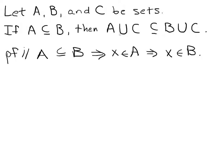Now, we want to prove that the union of set A and set C is a subset of set B union set C. We're going to start off by assuming that we have an element in the set on the left, A union C. So let's assume that X is going to be a member of the union of the two sets. We've assumed this, and what we want to do is prove that that same X is also a member of set B union C.